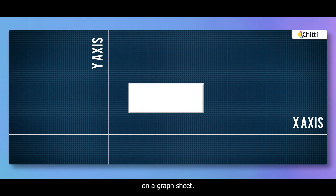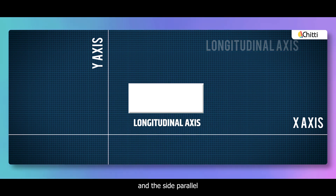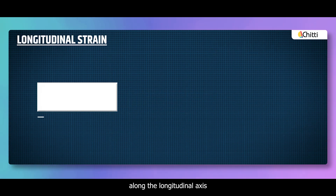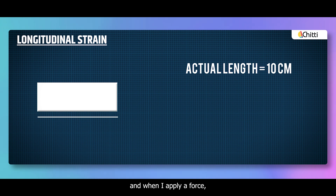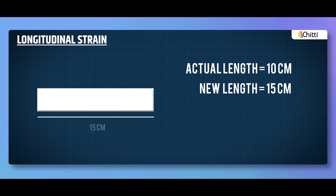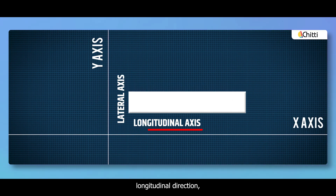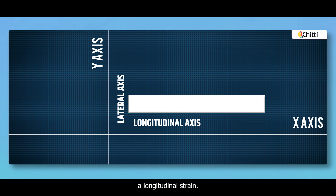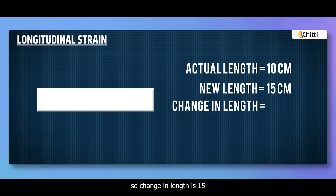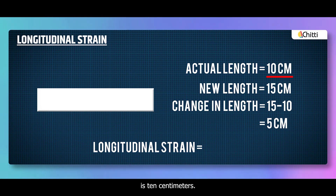This rubber is on a graph sheet. Let's consider the side parallel to the x-axis as the longitudinal axis and the side parallel to the y-axis as the lateral axis. The length of the rubber along the longitudinal axis is 10 cm, and when I apply a force, the rubber expands and becomes 15 cm. Since the rubber expands in the longitudinal direction, it experiences longitudinal strain. Strain is change in length by original length, so change in length is 15 minus 10, that is 5 cm, and the original length is 10 cm. Dividing that, we get 0.5.